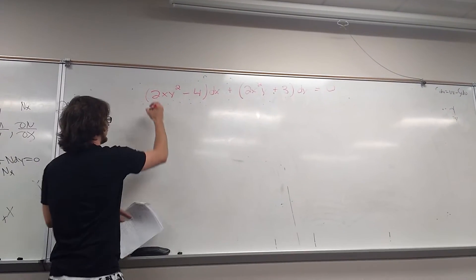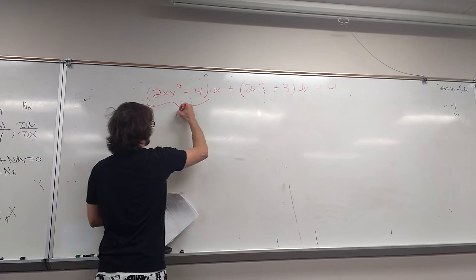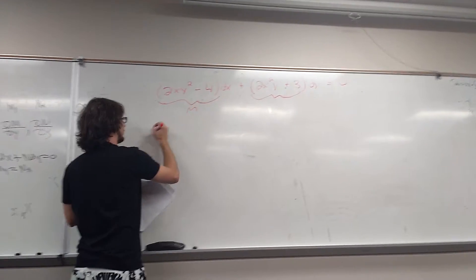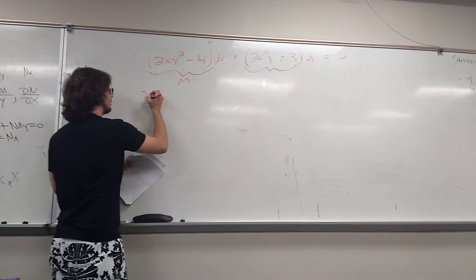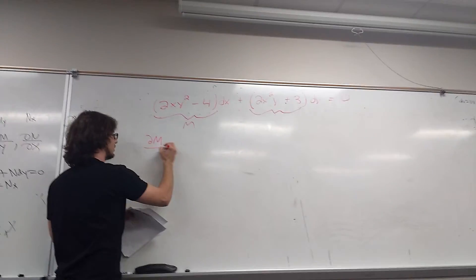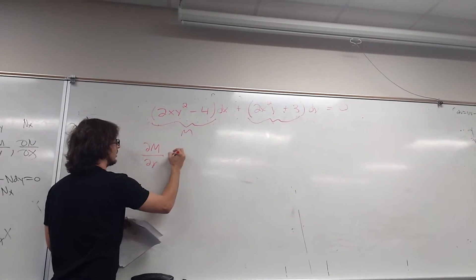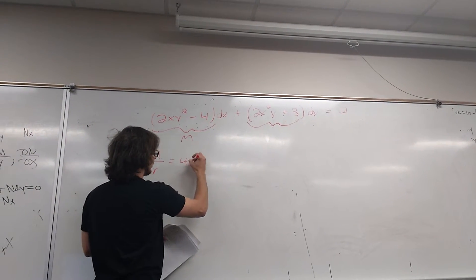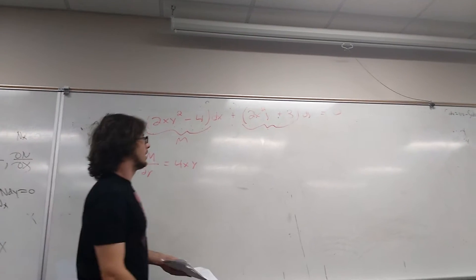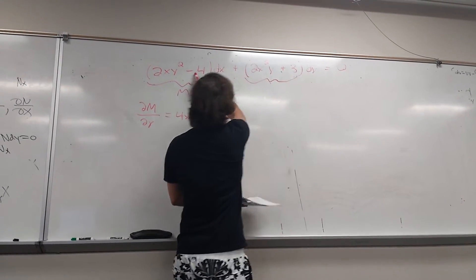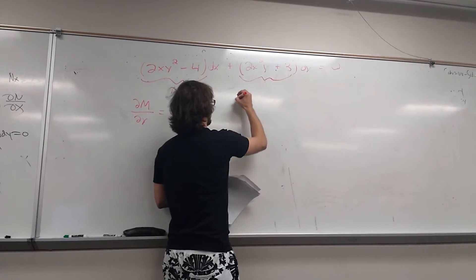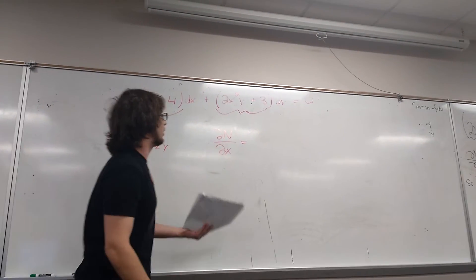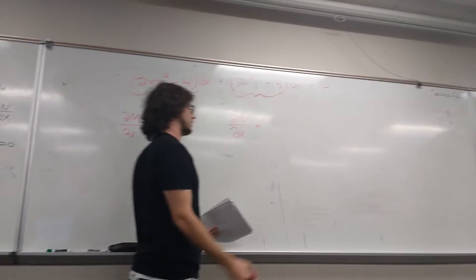So we call this m, call that n, and we compute our partial still. We do del n del y, and when we compute that partial we get 4xy, and then 4 is just 0. Then we do del n del x. Computing that partial you just get 4xy again, so it's exact.